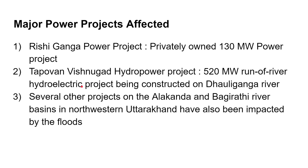Two major power projects were affected. First is the Rishi Ganga Power Project, a privately owned 130 megawatt power project. The other is the Tapovan Vishnugad Hydro Power Project, a 520 megawatt run-of-river hydroelectric project being constructed on the Dhauliganga river. Several other projects on the Alaknanda and Bhagirathi river basins in northwestern Uttarakhand have also been impacted by the flood.